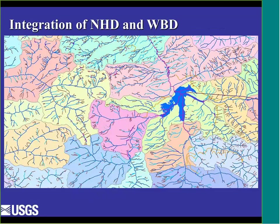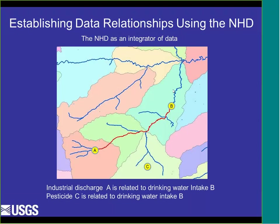One thing we'll talk about today are watersheds, because those define areas in which NHD data are both organized and updated. We are updating certain watersheds across the country for the DLCC project. You can see outlines of these smaller watersheds, something called the watershed boundary dataset, which helps define the NHD content. Because we have this integrated surface water data, we can not only use it for basic mapping and cartographic GIS datasets, but we can also use it to relate data along this network — things upstream can be related to what's happening downstream and vice versa.